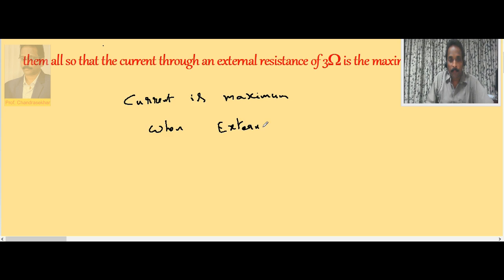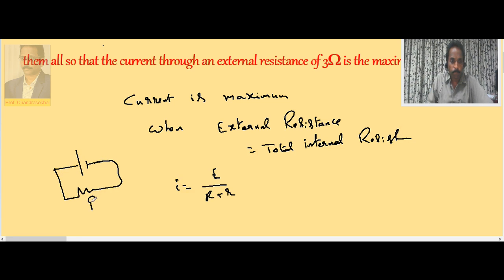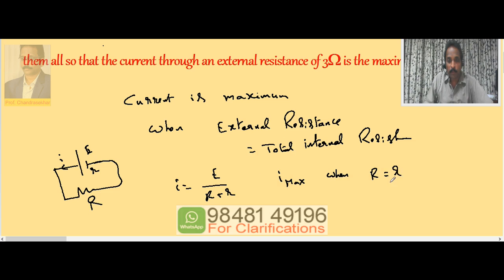If I take any simple circuit, say I is equal to E by capital R plus small r - a simple circuit with a cell and a resistance. So current I is given by E by r plus r. I is maximum when capital R is equal to small r.